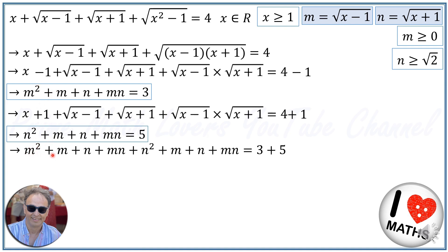Now I add both equations together. Adding the left sides gives M squared plus N squared plus 2M plus 2N plus 2MN, and the right side gives 3 plus 5.